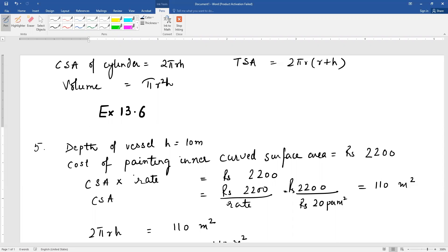The total cost of painting is curved surface area multiplied by rate. Therefore, curved surface area equals cost divided by rate: 2200 rupees divided by 20 rupees per meter square. After canceling, this gives you the curved surface area of 110 meters square.